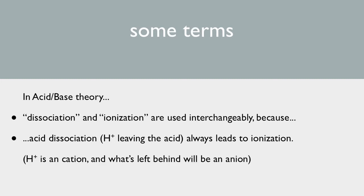And the hydrogen, of course, is the cation. What's left behind will be an anion. To illustrate the point, we have hydrochloric acid. Hydrochloric acid is a strong acid. It really wants to dissociate. And when it does, it makes two ions. Ionization.